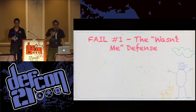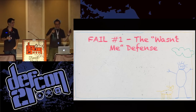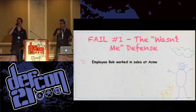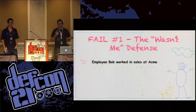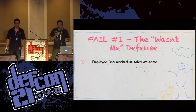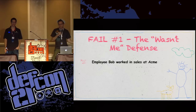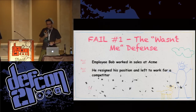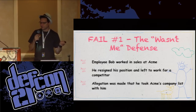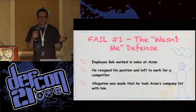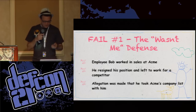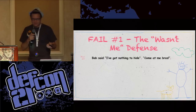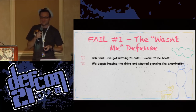Let's get into the first one. This is the 'it wasn't me' defense. So we do a lot of commercial litigation, and a really typical kind of case is a trade secrets case. So this guy Bob was working in sales at Acme. He resigned his position and decided to go work for a competitor. Allegations were made that he took some trade secrets — he took the customer list with him to his new company. Bob says, 'I got nothing to hide, come at me.'